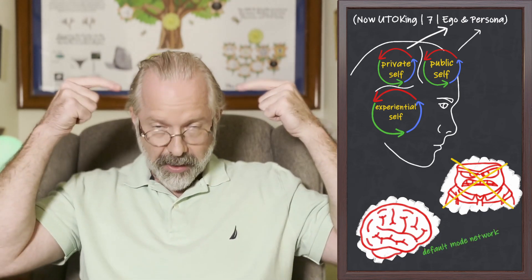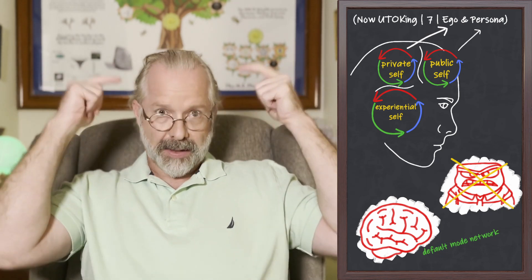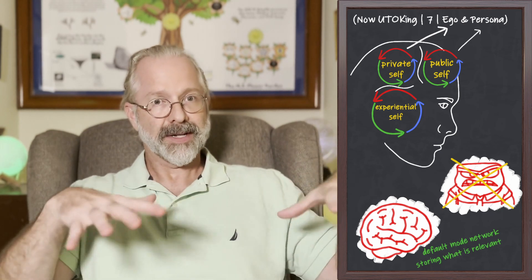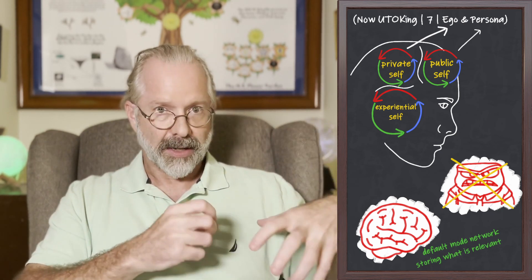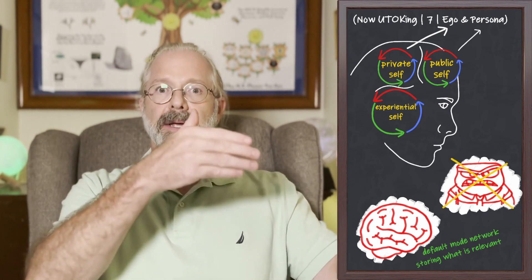Indeed, the default mode network can be thought of as the process by which the animal is storing, especially in higher animals, what's relevant. It becomes increasingly relevant as we get social and we track ourselves and the self-other environment, specifically our felt sense of being seen, known, and valued in the world.